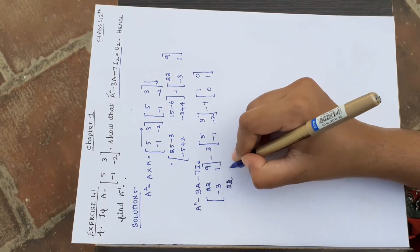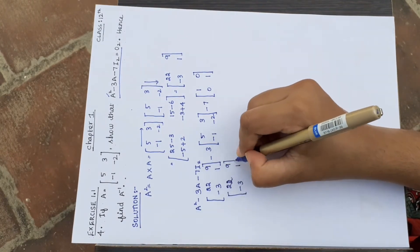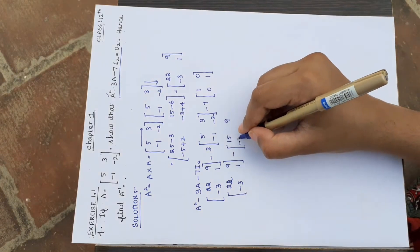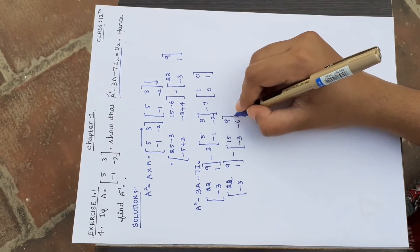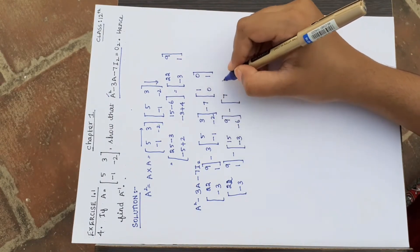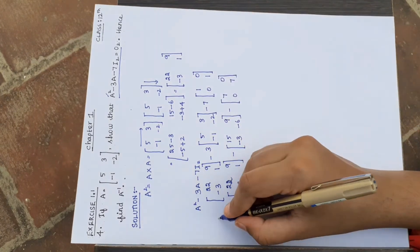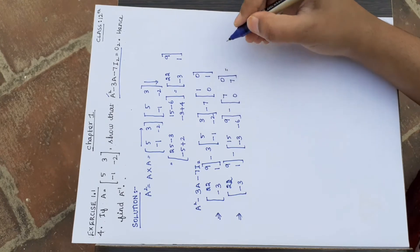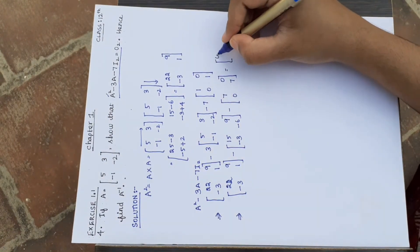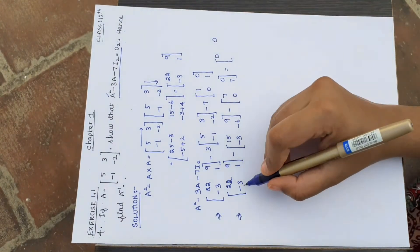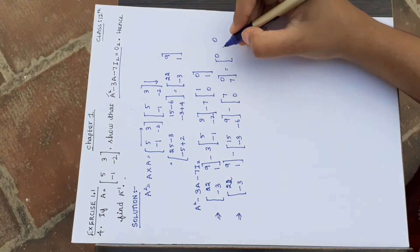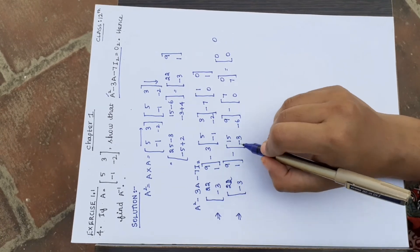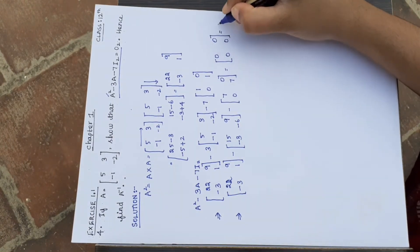Now solving: [[22, 9], [-3, 1]] minus 3 times [[5, 3], [-1, -2]] which gives [[15, 9], [-3, -6]], minus 7 times [[1, 0], [0, 1]] which gives [[7, 0], [0, 7]]. Computing: 22 minus 15 minus 7 = 0; 9 minus 9 minus 0 = 0; minus 3 plus 3 minus 0 = 0; 1 plus 6 minus 7 = 0. This is equal to null matrix of order 2. Hence verified — the condition is proved.